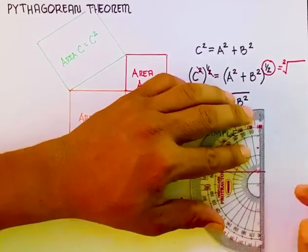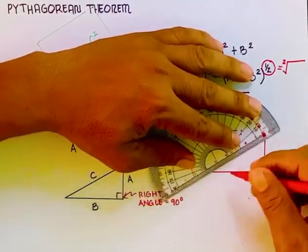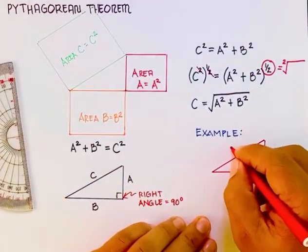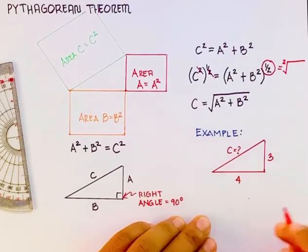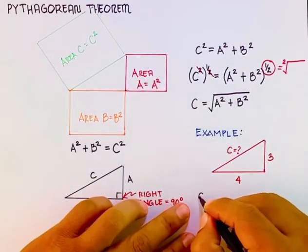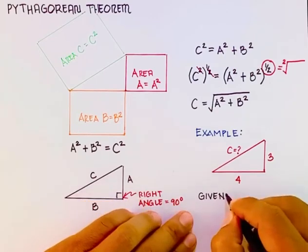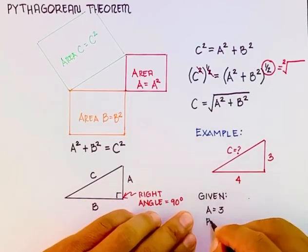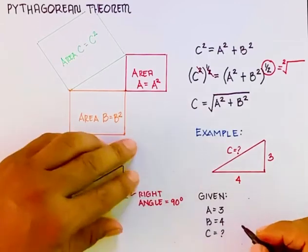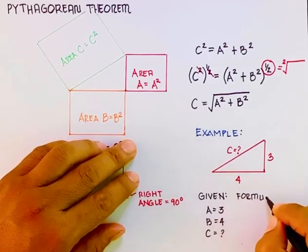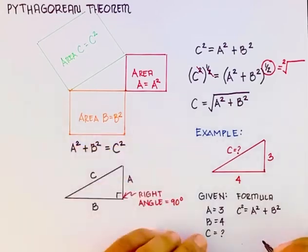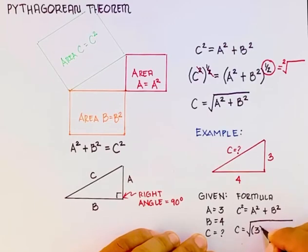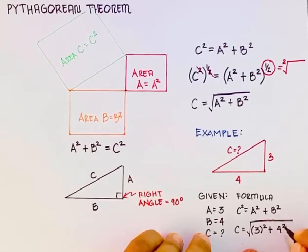So we will have an example about the Pythagorean Theorem. We can apply this by looking for the value of C, supposing if A is equal to 3 and B is equal to 4. So the given are the following. A is equal to 3, B is equal to 4, and C will be solved. Now, the formula is C is equal to the square root of A square plus B square. Or C is equal to the square root of 3 square plus 4 square.